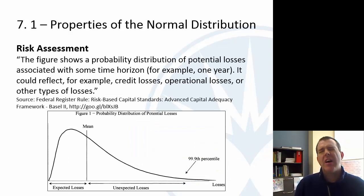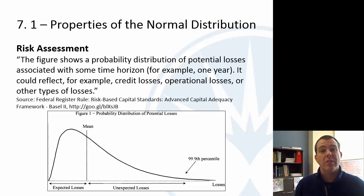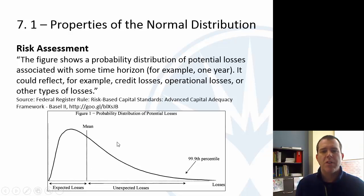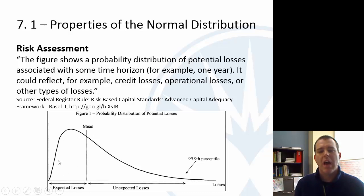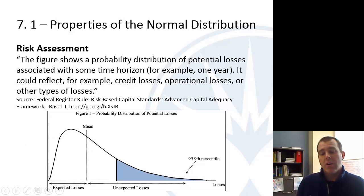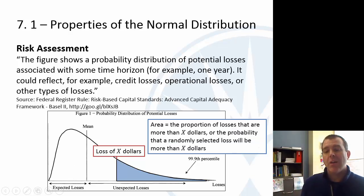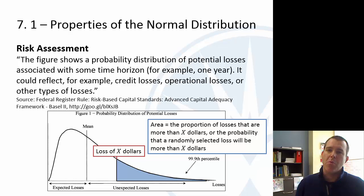Another example involves modeling risk — specifically credit losses. This PDF shows a distribution of losses: most losses cluster near the average, which are expected losses, but the right tail shows catastrophic unexpected losses. Shading an area beyond a particular dollar amount represents either the proportion of losses exceeding that amount, or the probability that any one randomly selected loss will exceed it. Again, the two interpretations of area are proportion or probability.